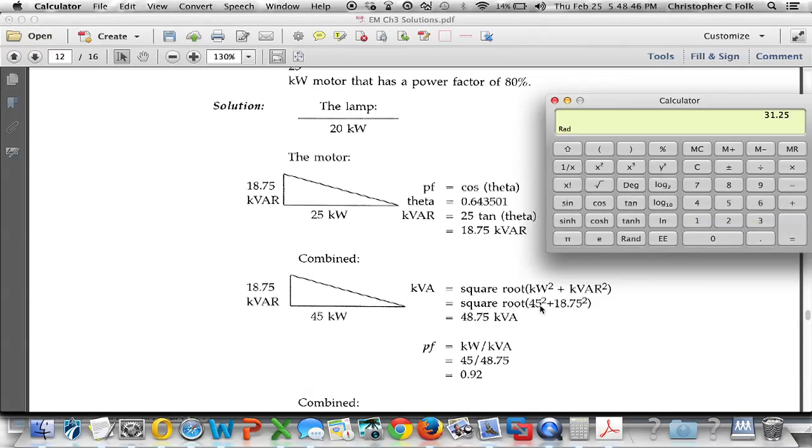And so in this case, we're going to take the 45 squared plus the 18.75 squared, get that sum, and get the square root of that. This is the Pythagorean theorem. A squared plus B squared equals C squared. So again, I'm going to clear this out. And I will put in 45 squared plus 18.75 squared equals, and then go over the square root to show that I'm using 48.75 kilovolt amps.